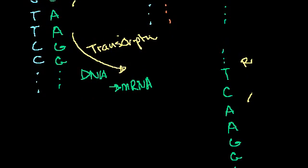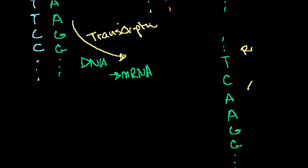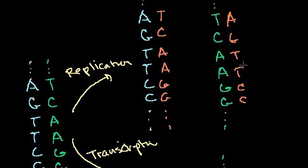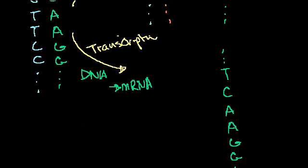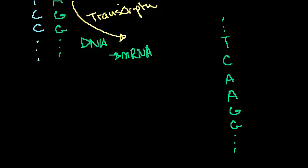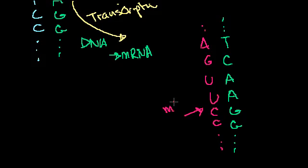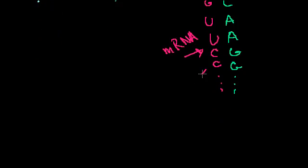Let's say we're just going to transcribe the green side. Instead of having deoxyribonucleic acid nucleotides pair up with this DNA strand, you have ribonucleic acid — RNA — pair up with it. The RNA pairs up: thymine on the DNA side pairs with adenine, guanine pairs with cytosine. In RNA, instead of thymine, we have uracil. So you get uracil, uracil, cytosine, cytosine — and it keeps going. This is mRNA. Once this mRNA separates, it leaves the nucleus.